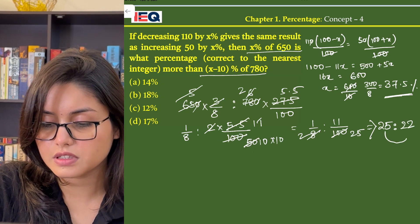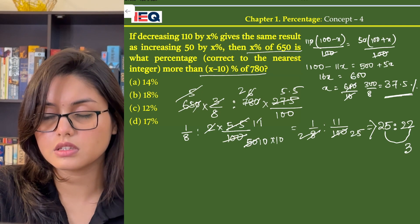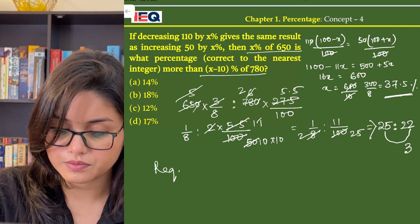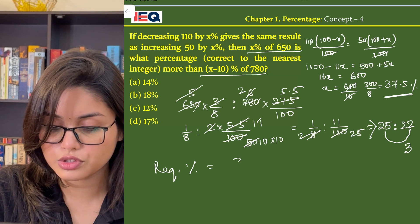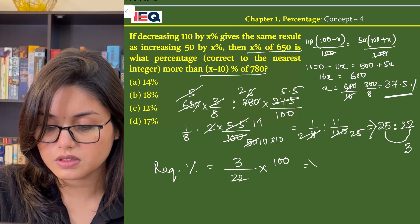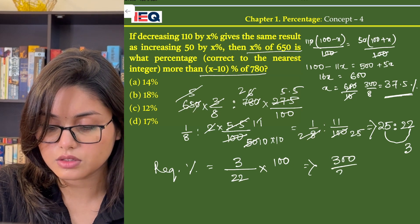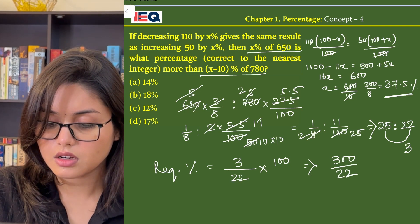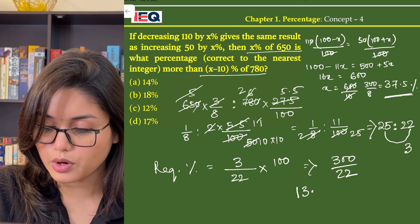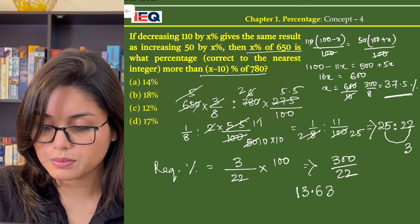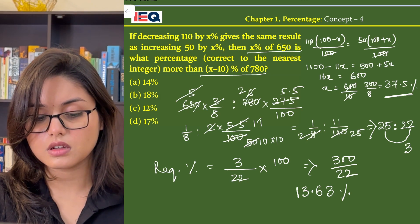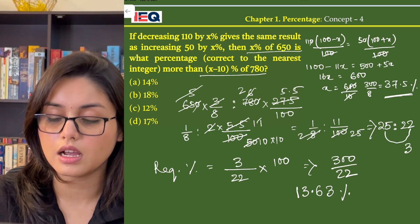Now what is the difference? The difference comes up to 3. So the required percentage equals 3/22 × 100, which equals 300/22. Now 22 ones are 22, giving approximately 13.63%. In the given options, option A is closest to our answer, which is 14%.